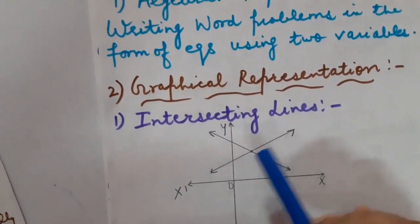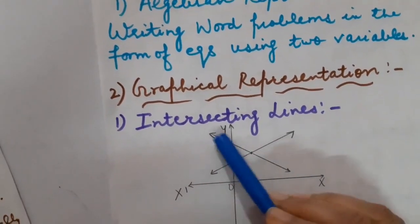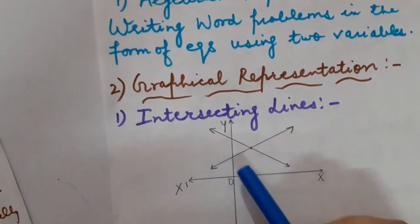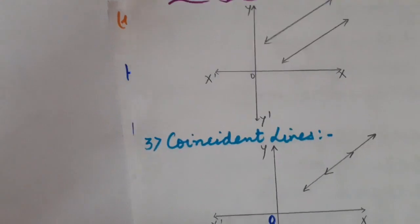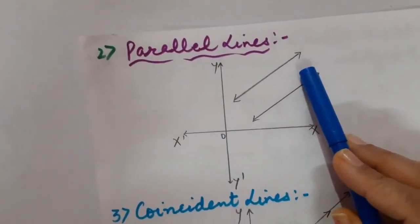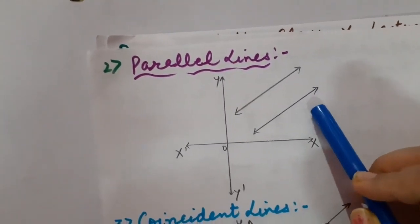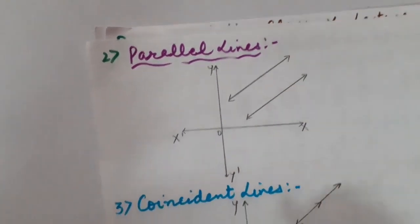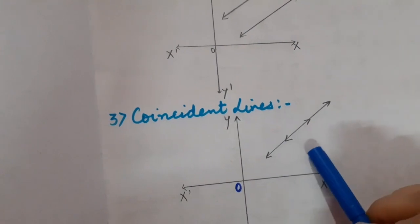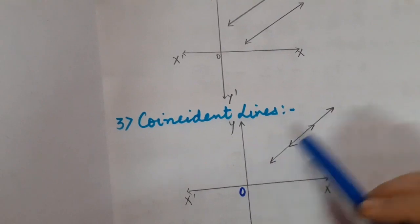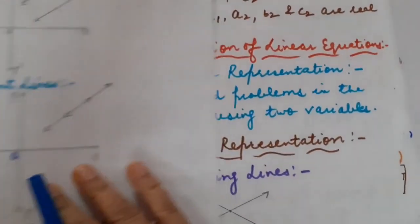The first condition was intersecting lines. When you draw 2 straight lines based on algebraic expressions from a word problem, both lines intersect each other. Another case was parallel lines — the graph shows lines parallel to each other with no point of intersection. The third case was coincident lines: you plot coordinates of the first line and then the second line, and one line overlaps the other. This was all discussed in lecture number 1.